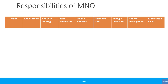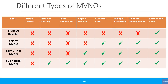We can show the responsibilities of an MNO and the different types of MVNOs in this slide. A branded reseller is just using its own brand and doing marketing and sales, but relying entirely on the MNO for everything else. A skinny MVNO would also provide handset management, billing and collection, and customer care. A light or thin MVNO would additionally have its own portal, applications and services. Finally, a full or thick MVNO has the whole infrastructure except for the access part, meaning they generally own the core network, the HLR and HSS databases, etc.